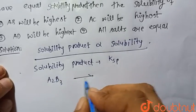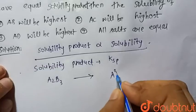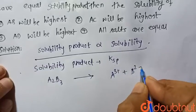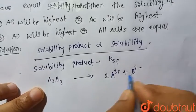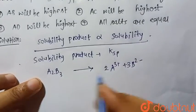A2B3 decomposes into A3+ plus B2-. So if we balance the charge, there should be two, there should be three.